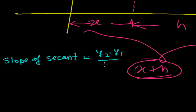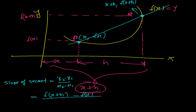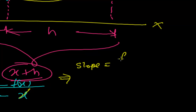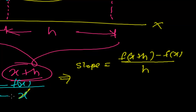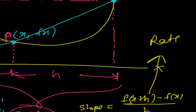Again using the same formula, y2 minus y1 over x2 minus x1: y2 is f of x plus h, y1 is f of x, x2 is x plus h, and x1 is x. We cancel the x terms, and we get the slope of the secant as f of x plus h minus f of x, whole divided by h. This is the rate of change of this function between points p and q.